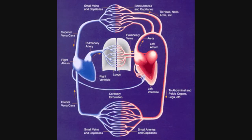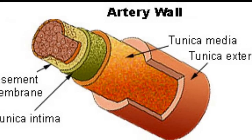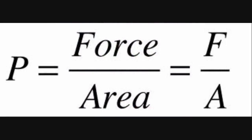This decrease in pressure is a byproduct of two important factors. The first being the elasticity of the arterial vessels. Secondly, the arterial system flowing from the aorta to the arterioles branches off and actually increases in surface area in contact with the blood, which decreases the net pressure applied on the fluid. This is an important equation to memorize: pressure equals force over area.